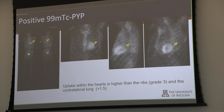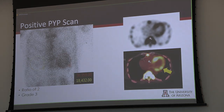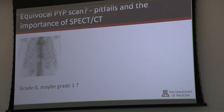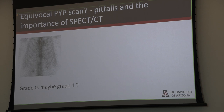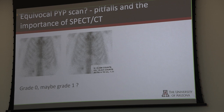Let's go over some cases. The first is a no-brainer — grade 3, you can see it across the street; you don't even need quantitation. The second case shows visible uptake where calcium deposition is most prominent, consistent with probable ATTR. The third is an interesting case — grade 0, maybe grade 1 — with a slight uptake that could be debated, but the H/CL ratio comes out at 1.1.